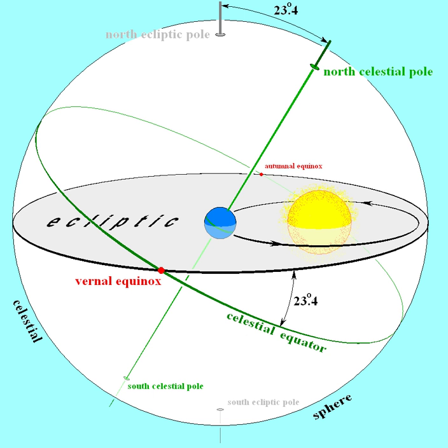Likewise, the ecliptic itself is not fixed. The gravitational perturbations of the other bodies of the solar system cause a much smaller motion of the plane of Earth's orbit, and hence of the ecliptic, known as planetary precession. The combined action of these two motions is called general precession, and changes the position of the equinoxes by about 50 arcseconds per year.